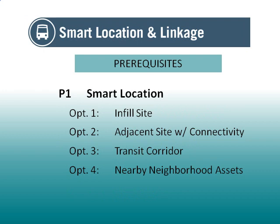In very basic terms, the options are: one, infill sites, which are sites surrounded by a high percentage of previously developed land; two, adjacent sites, which are sites surrounded by lands with a lesser percentage of previous development but which have a high degree of street intersections and road connections; three, sites near public mass transit; and four, sites with nearby neighborhood assets such as grocery stores, retail, service centers, and institutional uses.